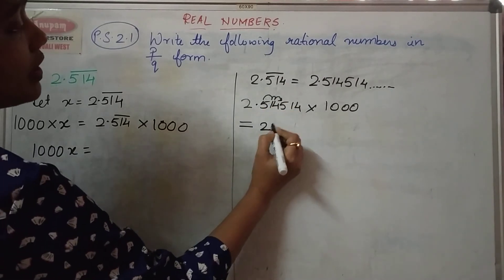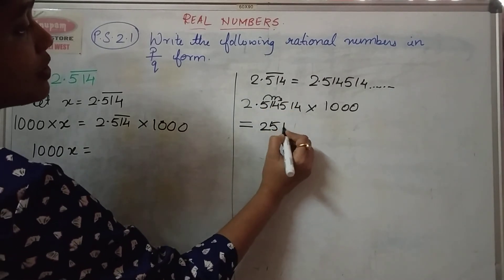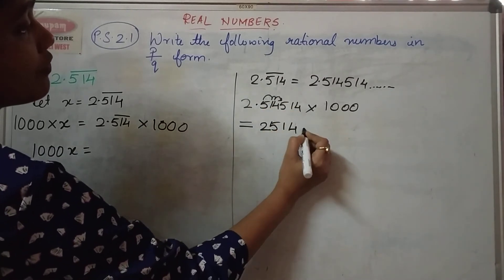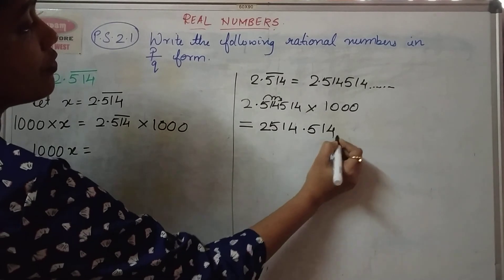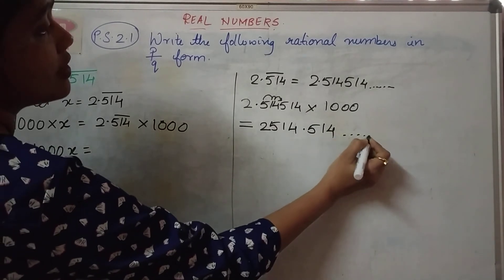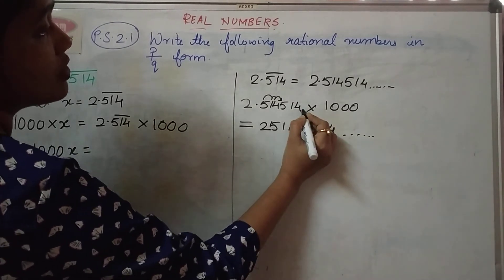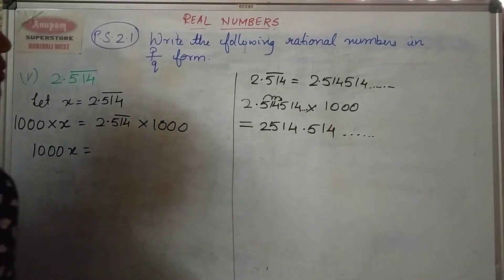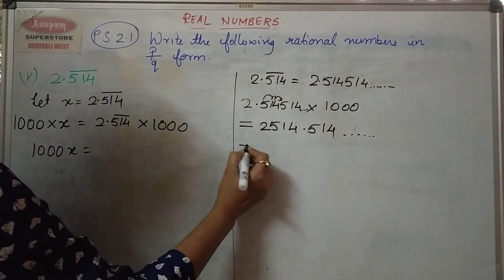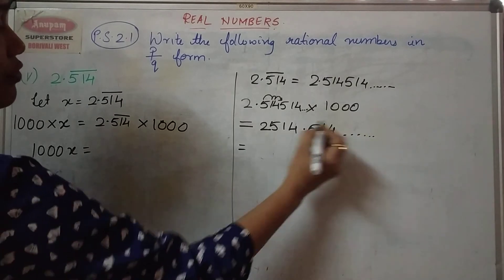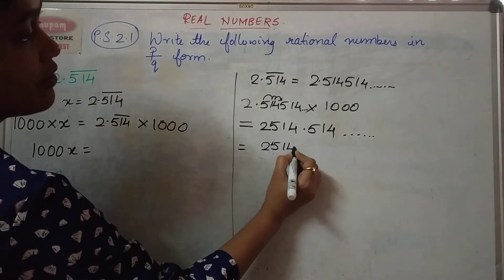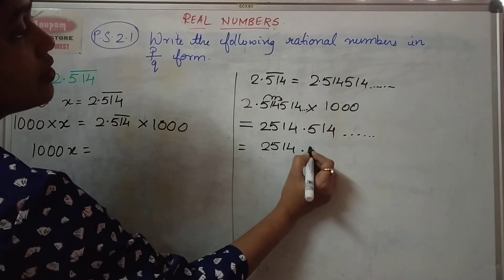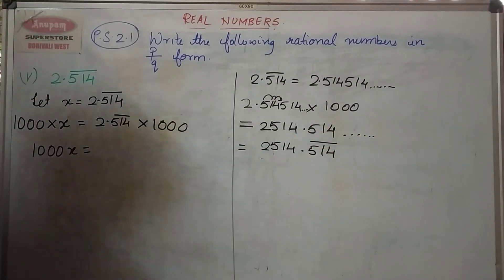So our number becomes 2514.514 and this will continue. Since 514 is going to be repeated, I can write this as 2514.514 bar.